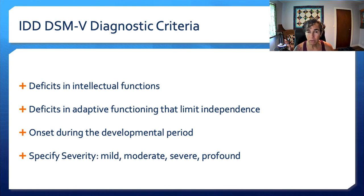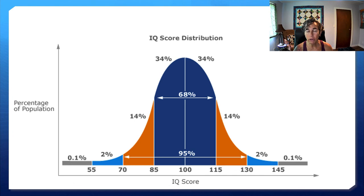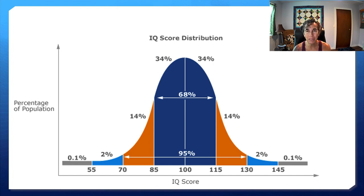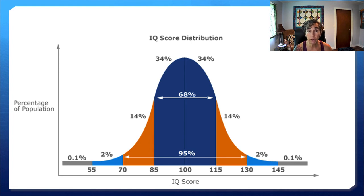IDD severity is specified according to the DSM-5 as mild, moderate, severe, or profound. A bell curve shows IQ score distribution: between 85 and 115, 68% of the population falls in that range. Between 55 and 70, about 2% of the population, and below 55 is 0.1% of the population. So mild to moderate makes up a greater percentage, but we also see children with severe or profound intellectual disability.